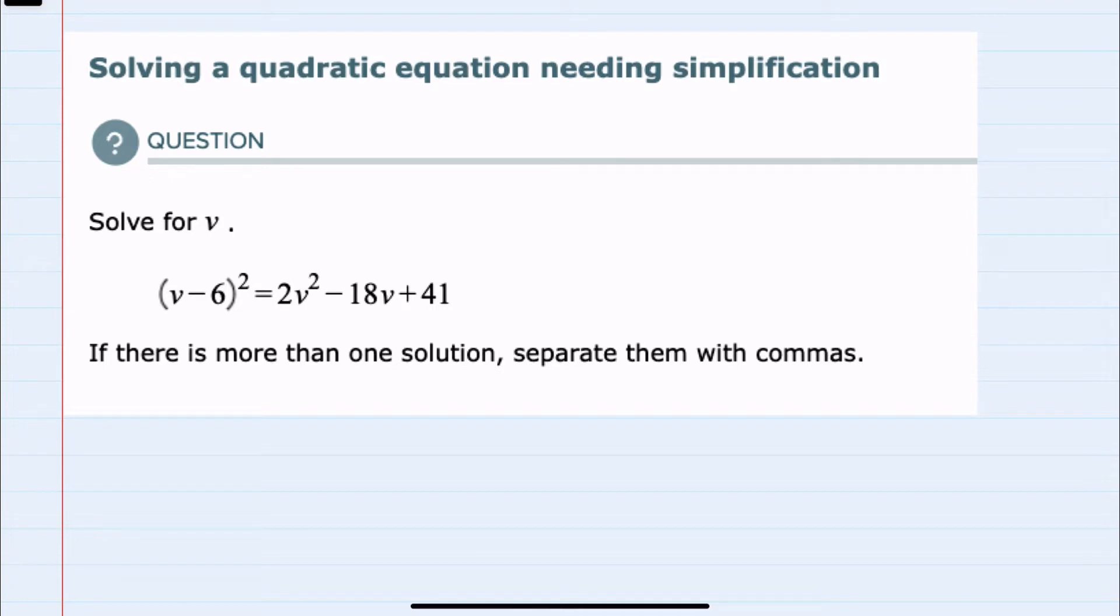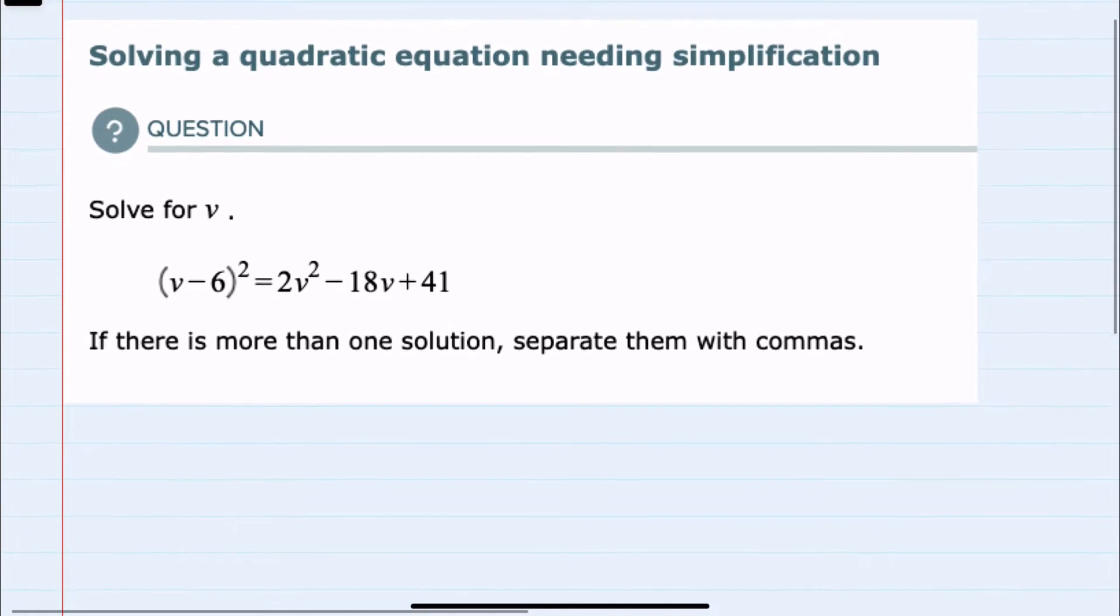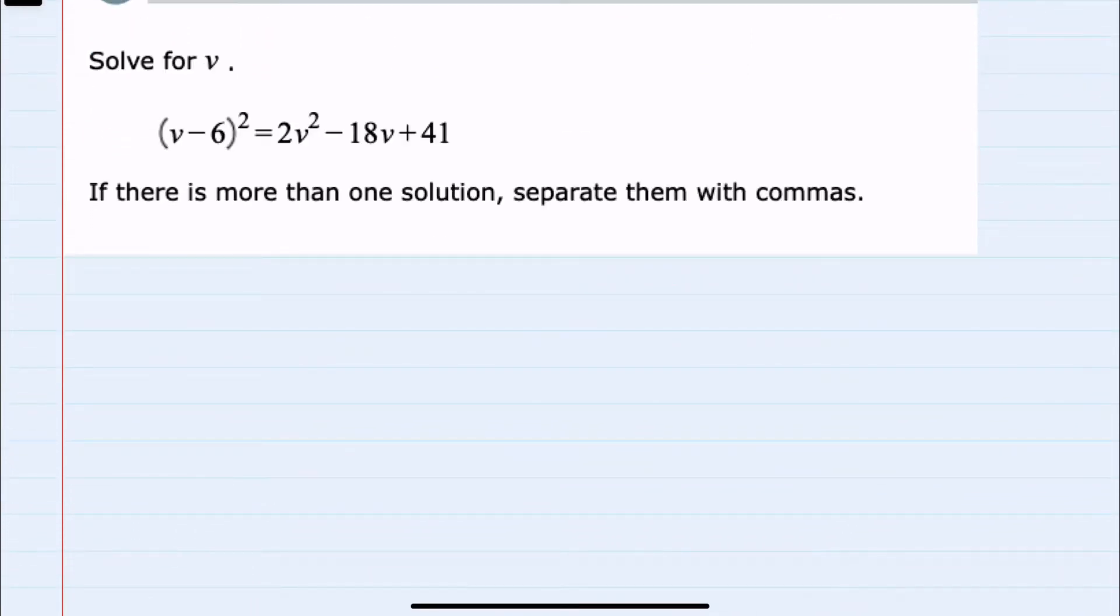To begin simplifying, I'm going to want to combine some like terms, but before I do so, on the left-hand side, this v minus 6 squared, I'm going to go ahead and multiply that out. You can either use the formula, or you can multiply v minus 6 times v minus 6 by foiling those out and simplifying.